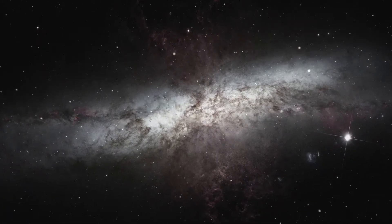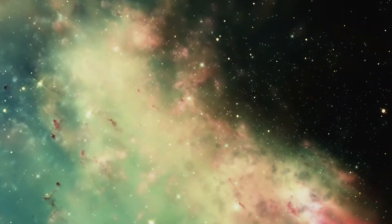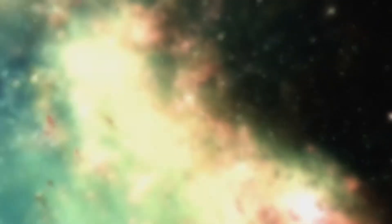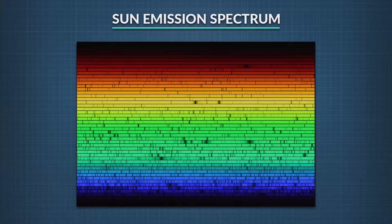Spectral lines also help scientists analyze what celestial bodies, like galaxies, stars, or planets are made of. These are the spectral lines of our own Sun. There are an incredible number of them in this image, from all the different elements in the Sun, each with their own spectral composition. And here's a mystery — there are some spectral lines that scientists don't recognize. There is something else happening in the Sun that does not allow those wavelengths to be emitted, but we don't know what it is.